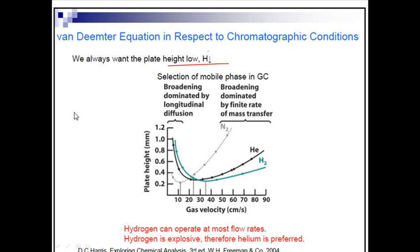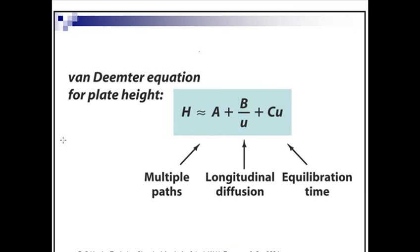We always want the plate height H to get smaller. This is the Van Deemter equation for plate height: it accounts for multiple paths, longitudinal diffusion, and the equilibrium or mass transfer term.